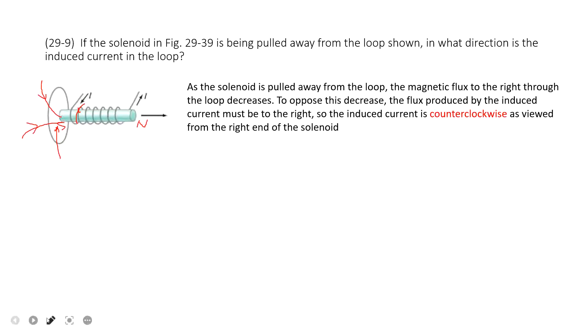And then we can see this magnet, or this solenoid, will pull away. When it pulls away, that means the magnetic field will decrease in this loop.